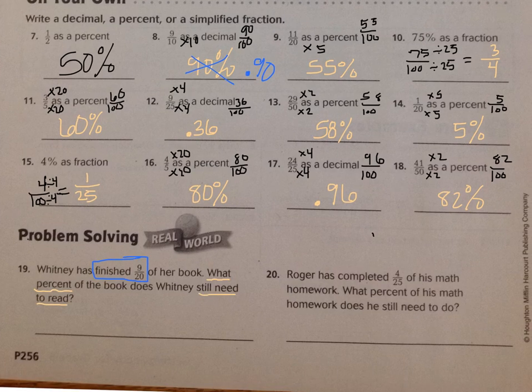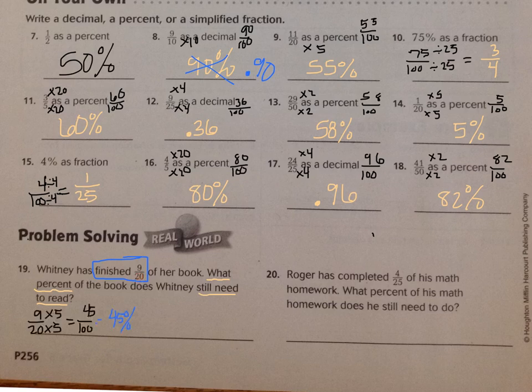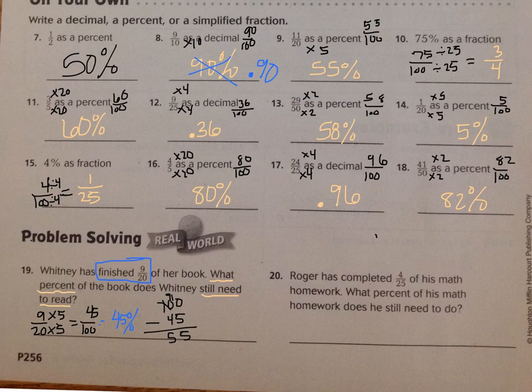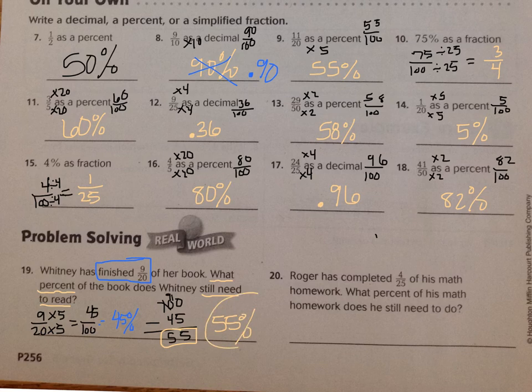On number 19, they give you the information of finished nine-twentieths of the book. They want to know what is still needed to read, but they want to know it in a percent. So you need to find out nine-twentieths as a percent. She's read forty-five percent, but what's still needed, so we need to do a hundred percent minus forty-five percent. And you do that, and you end up with fifty-five, so she still needs to read fifty-five percent of the book.